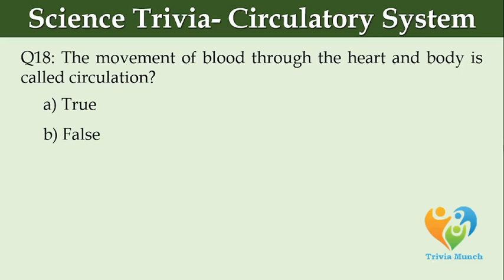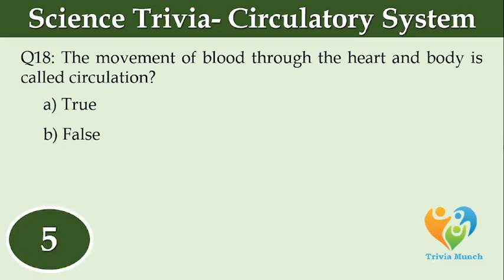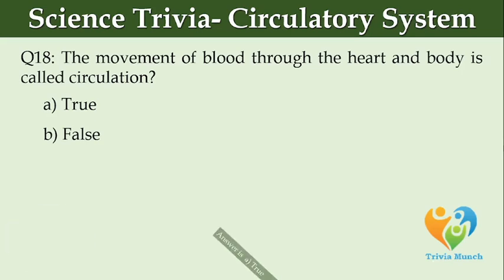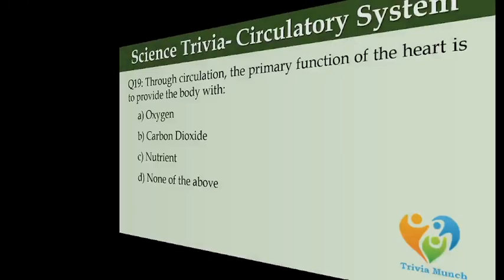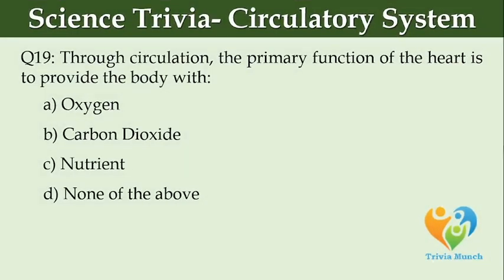Through circulation, the primary function of the heart is to provide the body with blank. Option A: oxygen. Option B: carbon dioxide. Option C: nutrition. Option D: none of the above.